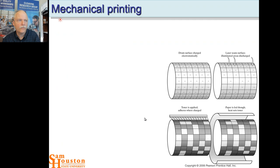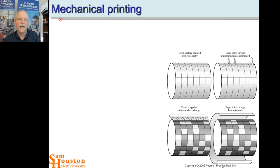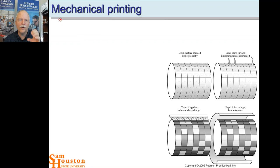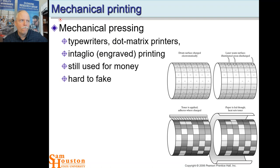In mechanical printing — copiers — you have an electrostatically charged drum. You take an image from the scanner and charge that drum with the pattern. Paper is rolled along the drum, toner is transferred to the paper, and then that toner is fused onto the paper in the fuser — a very hot region with a hot wire that melts the toner permanently onto the paper. There are different ways of attaching print to paper, and these can be very forensically relevant.